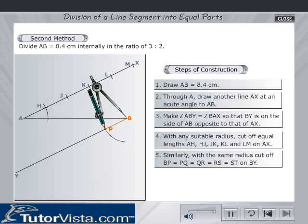Similarly, with the same radius, cut off BP equals PQ equals QR equals RS equals ST on BY.